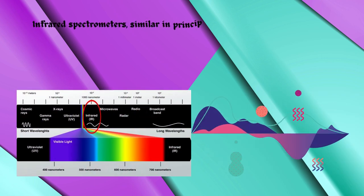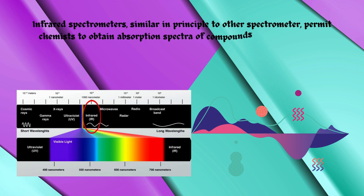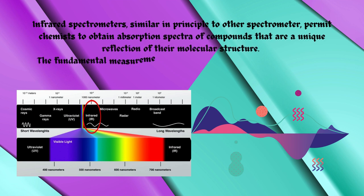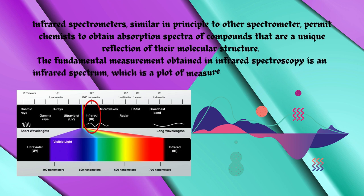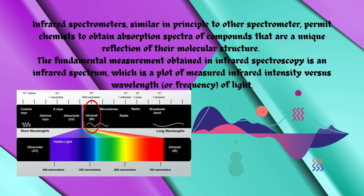Infrared spectrometers, similar in principle to other spectrometers, permit chemists to obtain absorption spectra of compounds that are a unique reflection of their molecular structure. The fundamental measurement obtained in infrared spectroscopy is an infrared spectrum, which is a plot of measured infrared intensity versus wavelength or frequency of light.